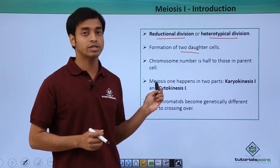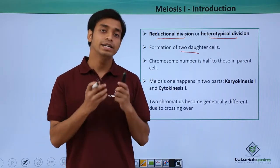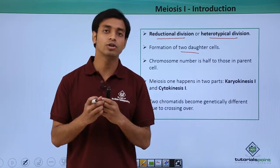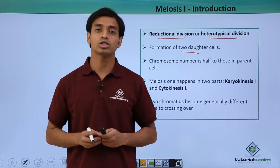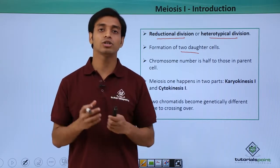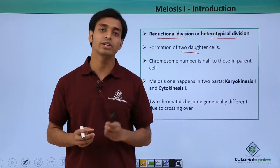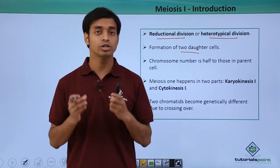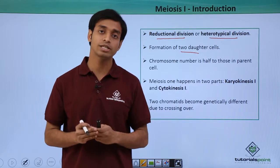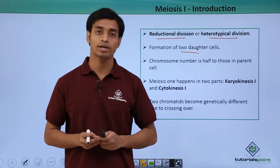A very important characteristic feature of meiosis 1 is that crossing over takes place. Due to this crossing over, recombination of genes occurs, which results in the formation of new types of traits, variations, and mutations. This is a very important significance of meiosis which actually happens in meiosis 1.